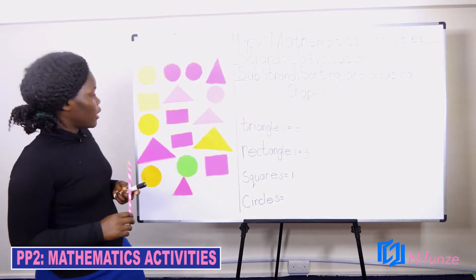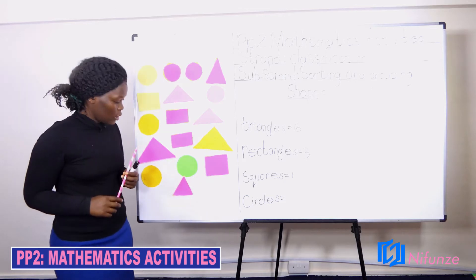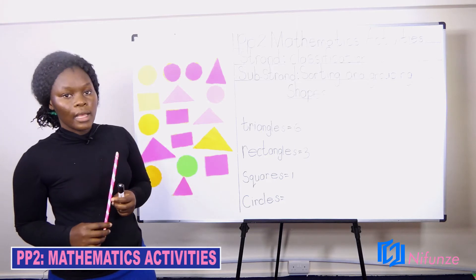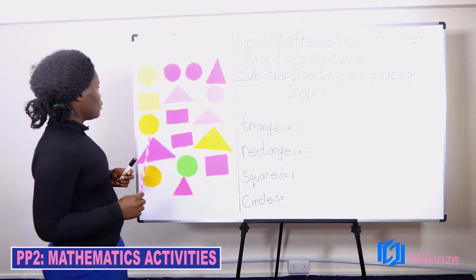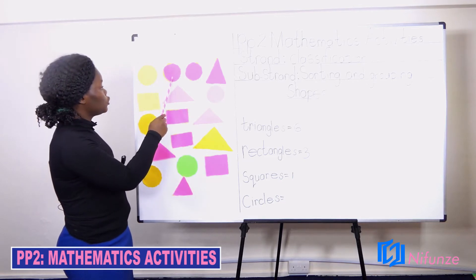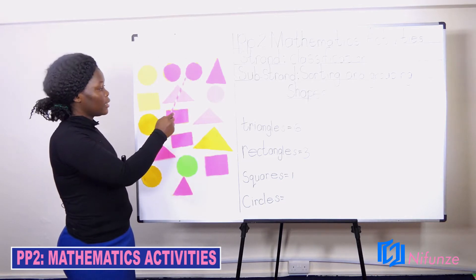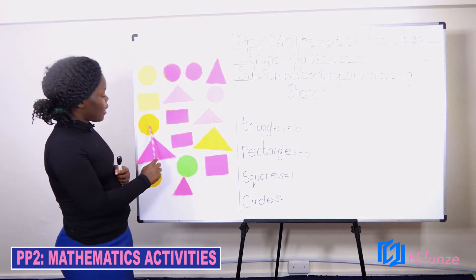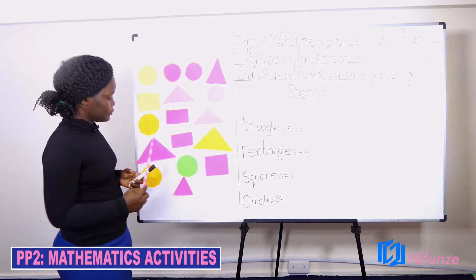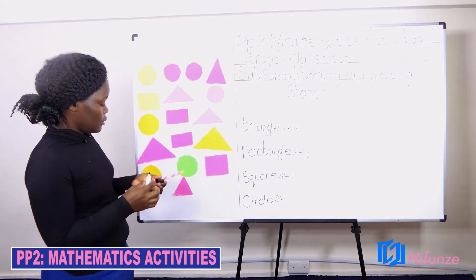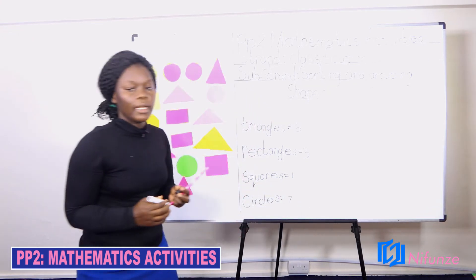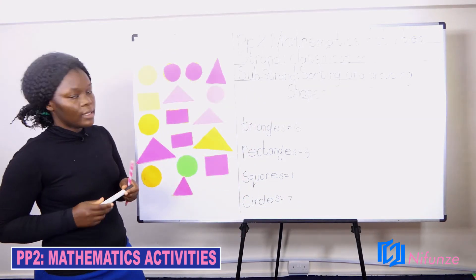Now we are remaining with the circles. Are you able to see any circles on the board, class? Are you able to see? Good. Let's count together. One, two, three, four, five, six, seven. The teacher writes seven under the word circles.